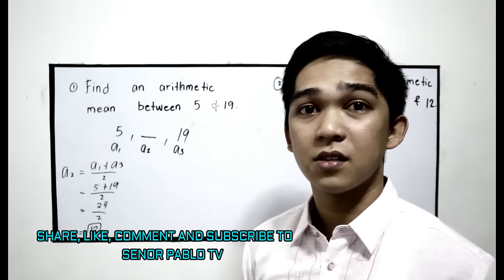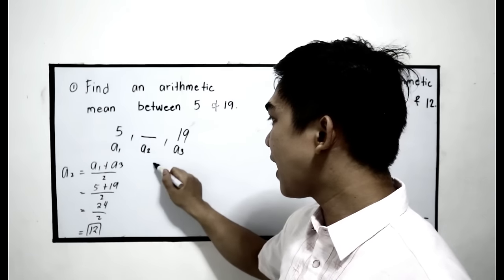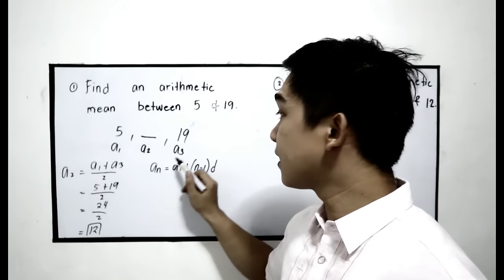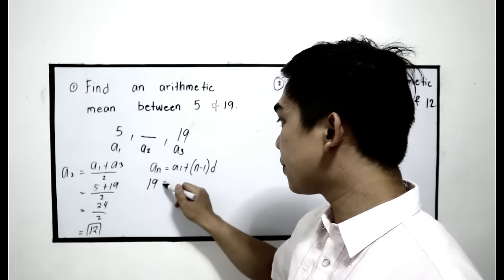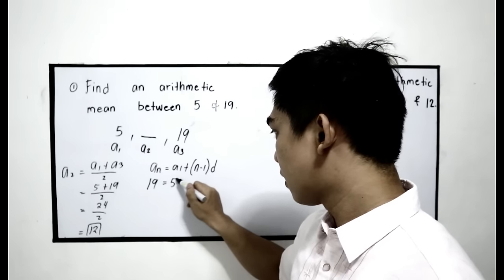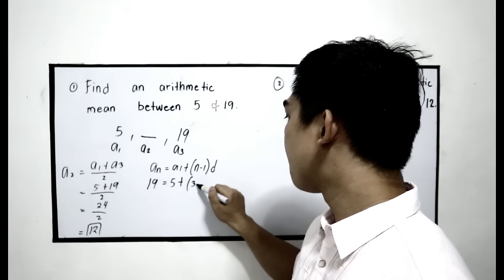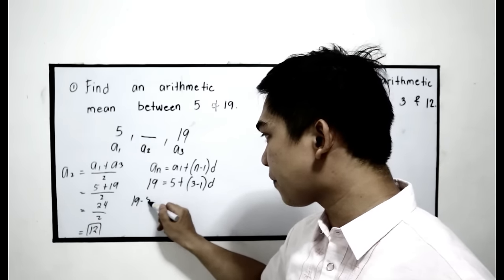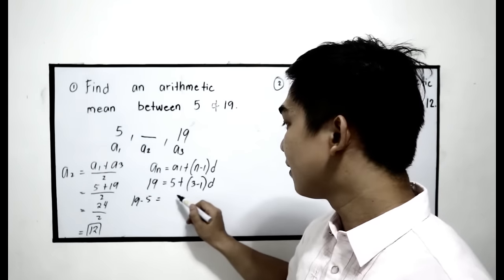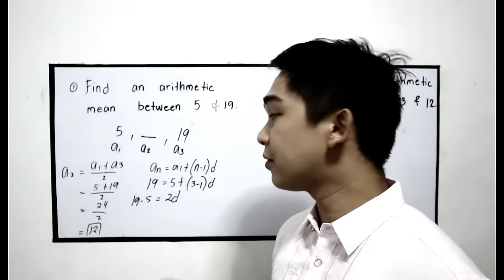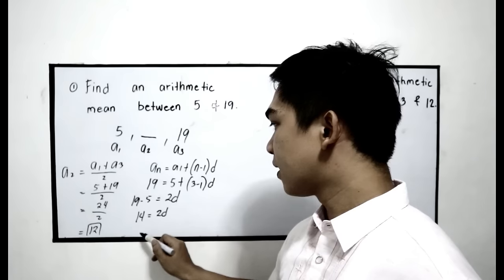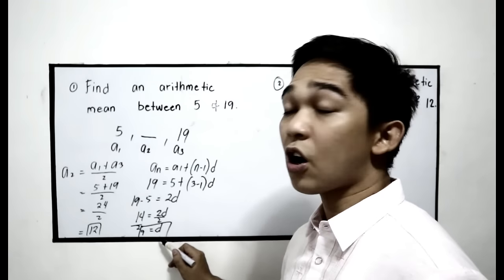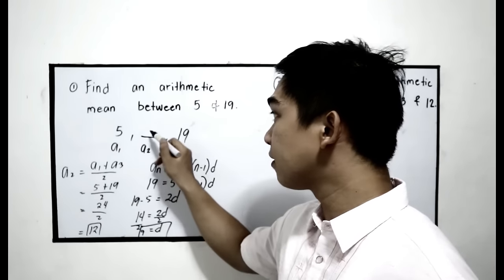Now let us check using our formula. Let us find the common difference. Since we have an is equal to a1 plus n minus 1 times d, and an is 19, substitute: 19 is equal to 5 plus 3 minus 1 times d. Transposing 5: 19 minus 5 is equal to 2d, so 14 equals 2d, divided by 2 gives d equals 7. Since the common difference is 7, we add 5 plus 7, which is 12, and 12 plus 7 is 19.